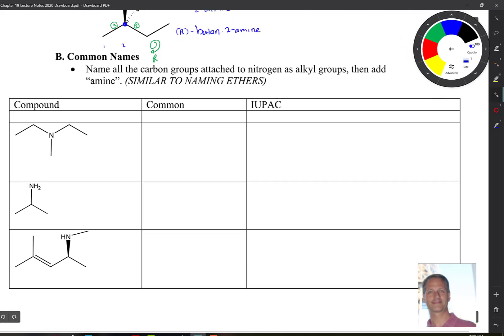And the common names are going to be similar to naming ethers in the sense that we name the alkyl groups as alkyl-alkyl amines, essentially. So if you look at that first compound here below, well, let's see if we can name this based on the common names. Well, this is an ethyl, this is an ethyl, and obviously here we have a methyl. So we don't have to call this an ethyl ethyl methyl amine. When we have two, we say dye. So then this would simply be a diethyl methyl amine.